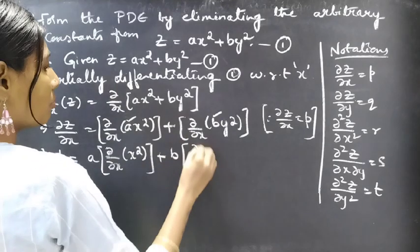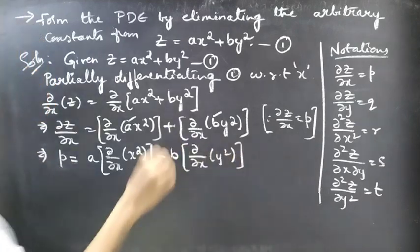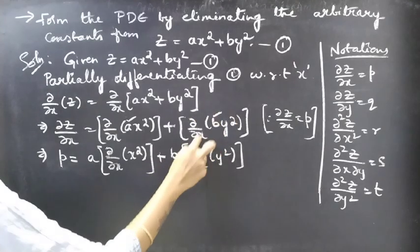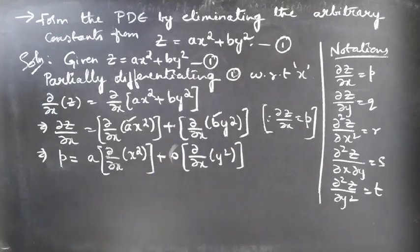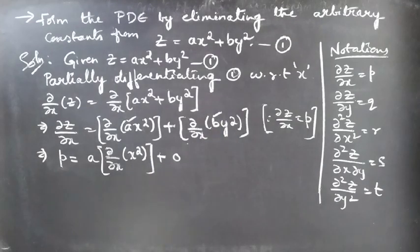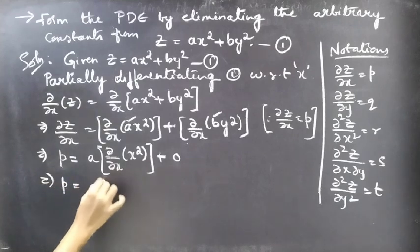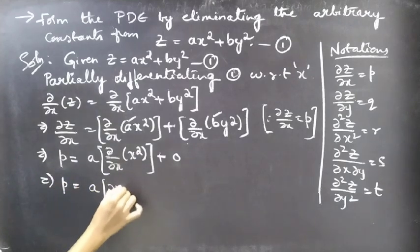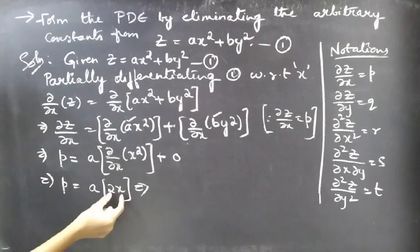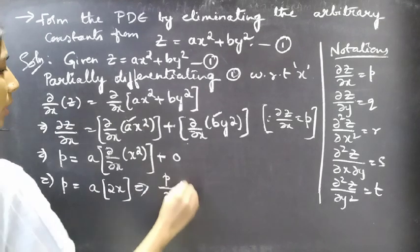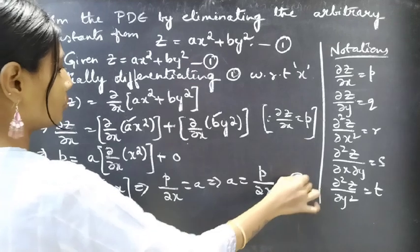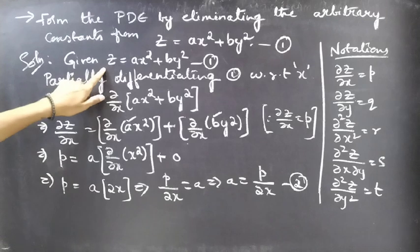We get p equal to a times the partial derivative of x² with respect to x, plus b times the partial derivative of y² with respect to x. Since b and y² are both constants, the partial derivative of that term with respect to x is 0. This gives us p = a·2x, so bringing 2x to the left-hand side, we get a = p/2x. Consider this as equation number 2.